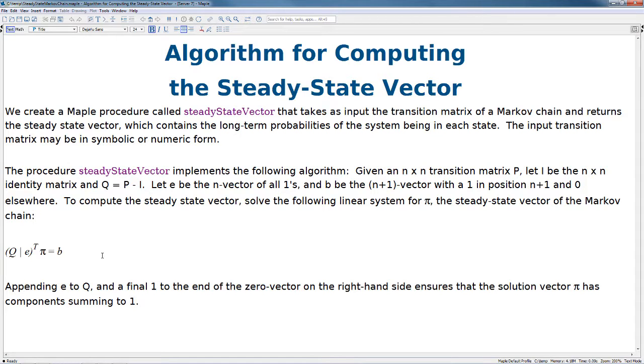Appending E to Q and a final 1 to the end of the 0 vector on the right-hand side ensures that the solution vector pi has components summing to 1.